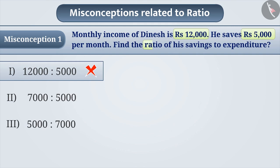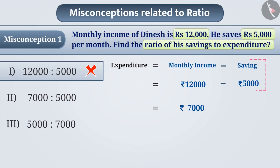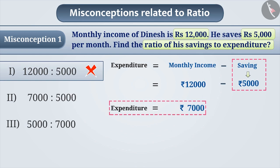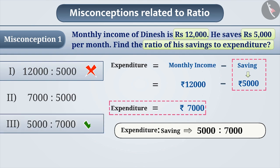Here, we have to find the ratio of savings to expenditure. If we deduct his savings from the income, then we can find the expenditure of Dinesh. Thus, expenditure is equal to Rs. 12,000 minus Rs. 5,000, which is equal to Rs. 7,000. Savings is Rs. 5,000 and expenditure is Rs. 7,000. Thus, the ratio of savings to expenditure is Rs. 5,000 is to Rs. 7,000. Therefore, the correct answer is option 3.